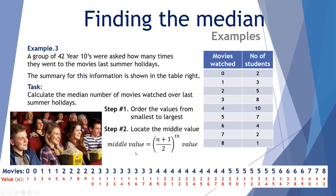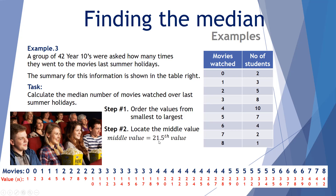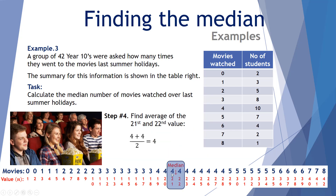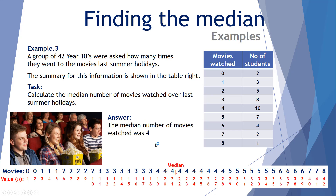Step two: locate the middle value. We have 42 students, so the middle value is (42 + 1) / 2 = 43 / 2 = 21.5, meaning between the 21st and 22nd values. There are 21 scores below and 21 above. The number of movies watched for the 21st and 22nd students is both four, so (4 + 4) / 2 = 4. The median number of movies watched over the summer holidays was four.